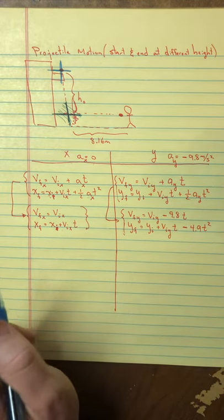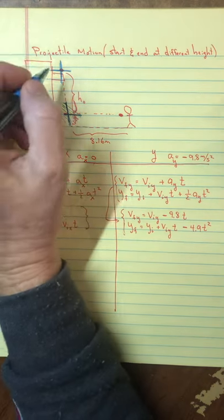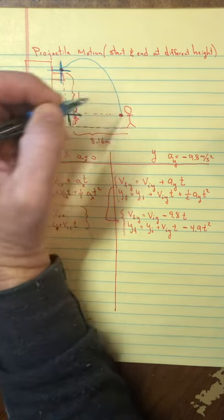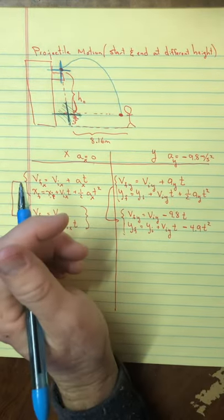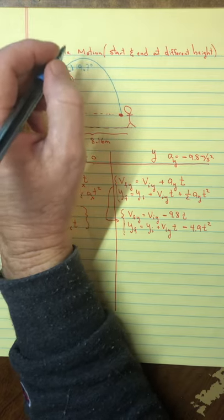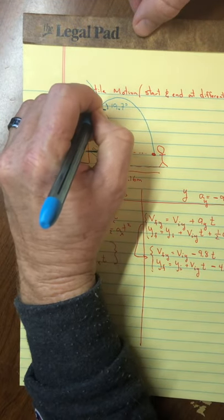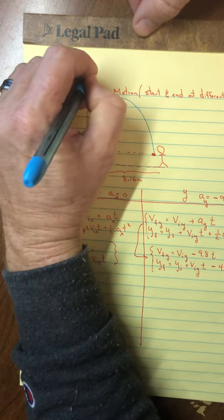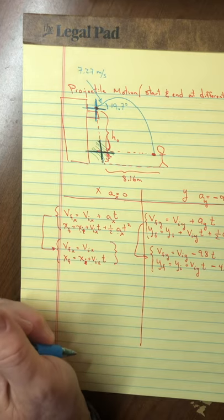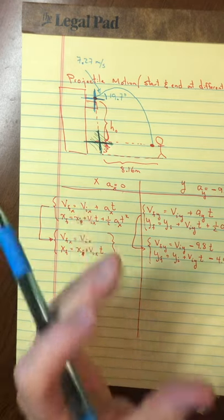It says if the keys were thrown with a speed of 7.27 meters per second at an angle of 19.7 degrees above the horizontal. So Melissa's roommate is tossing the keys upward at an angle as it lands into Melissa's basket catch. This initial angle is 19.7 degrees and the initial speed is 7.27 meters per second.